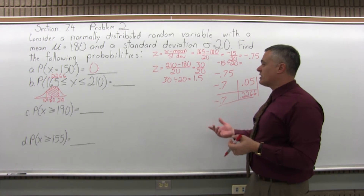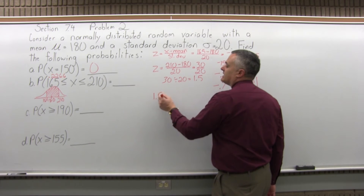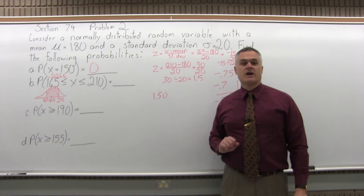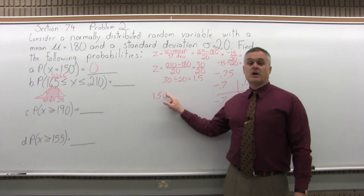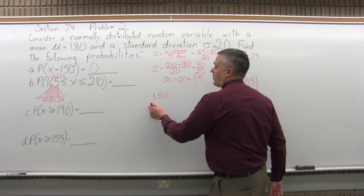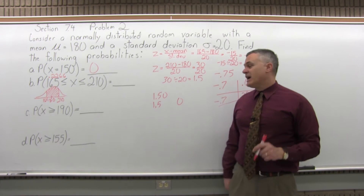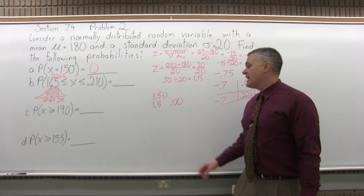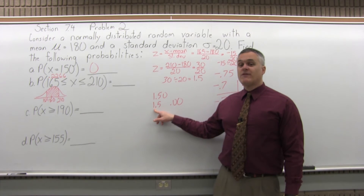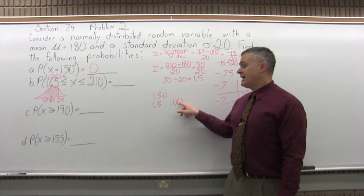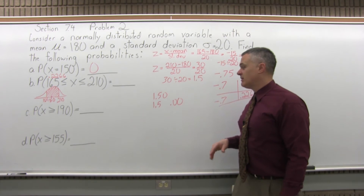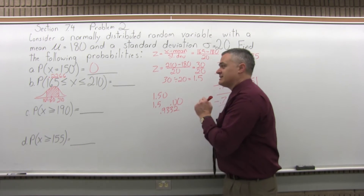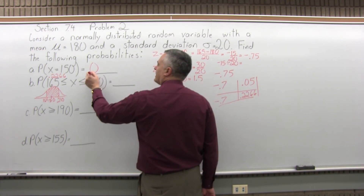To look up 1.5 in the chart: write it with two decimal places as 1.50. Split into two parts by pulling off the rightmost digit — 1.5 and 0, making it 0.00. Go to the positive 1.5 row, look in the 0.00 column (the very first column). Where those two intersect, you'll find 0.9332. That is the chart value for 210.